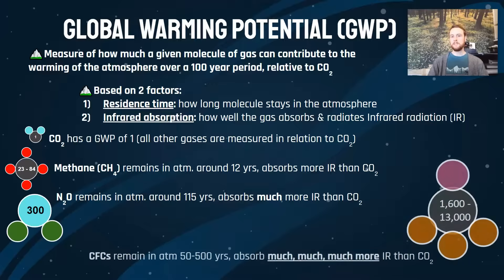CFCs range widely in their global warming potential because they are so diverse as a class. They stay in the atmosphere for 50 to 500 years, giving them an extremely long residence time, and because they absorb so much infrared radiation, their GWP ranges from 1,600 to 13,000. You don't need to memorize these numbers, but you should be aware of how much more warming a molecule of CFCs causes compared to a molecule of CO2.